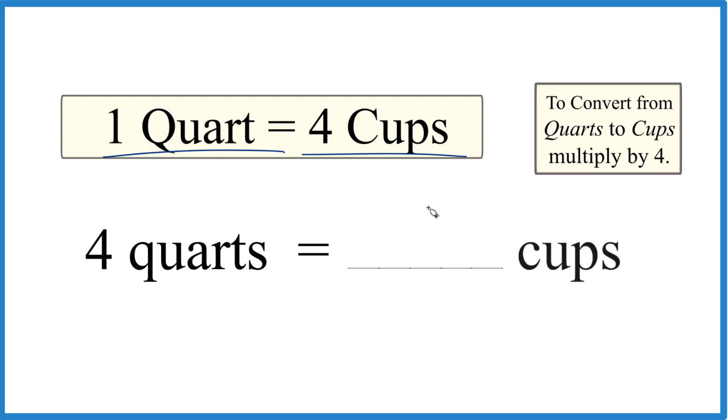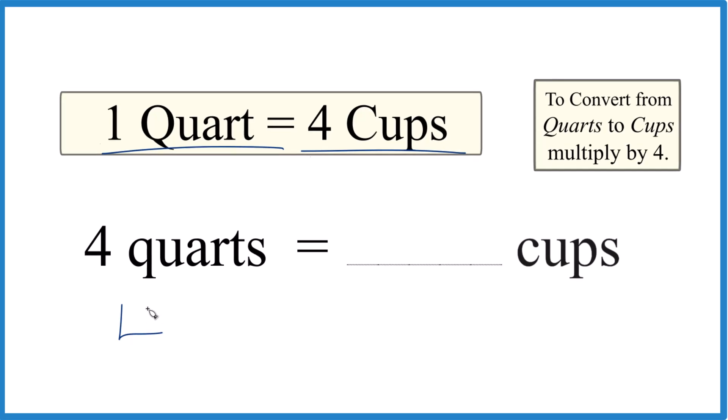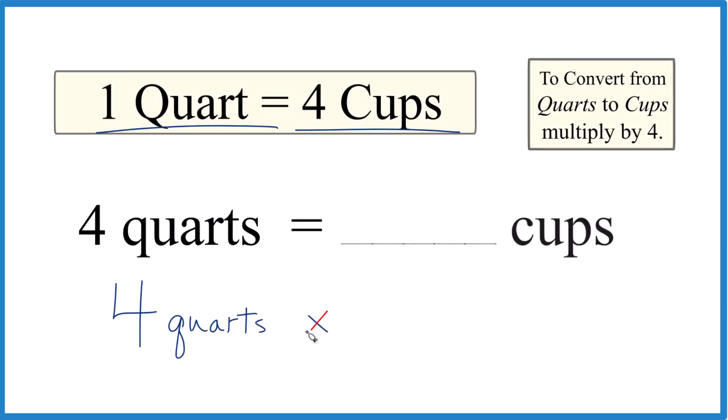Another way to do this is to think of it this way. We have four quarts, and so we're going to multiply that by four, because when we're going from quarts to cups, we multiply by four.